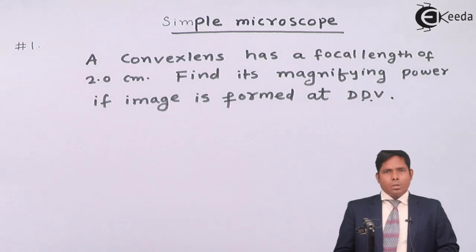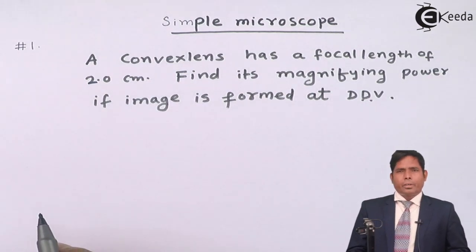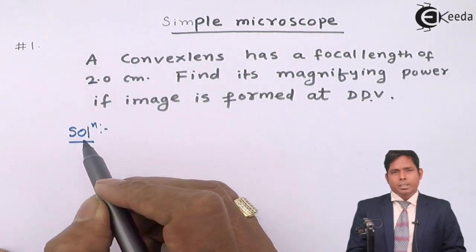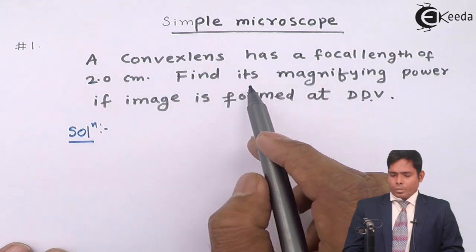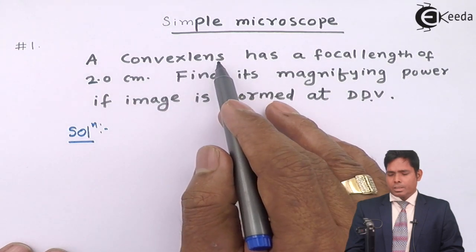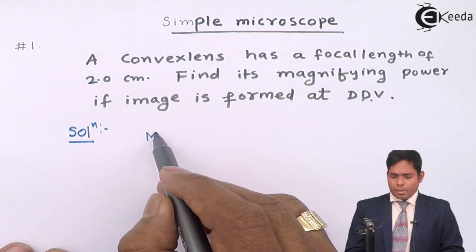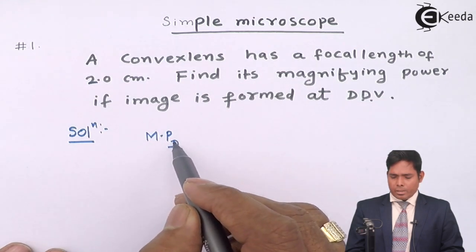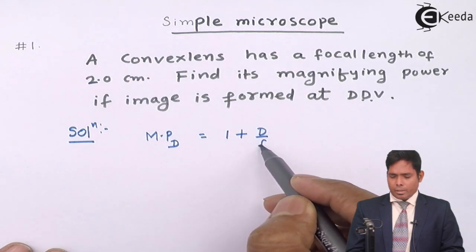Now, if convex lens has a focal length of 2 cm, find the magnifying power. The solution is very simple. We have already discussed in theory that in case of a simple microscope, a convex lens means it is a simple microscope. For a simple microscope, the magnifying power when the image is formed at DDV equals to 1 plus D by F.